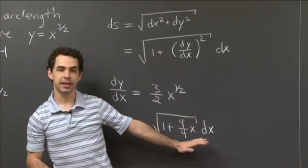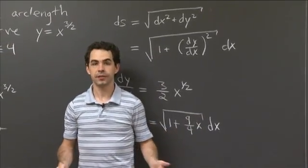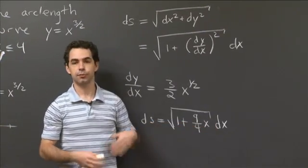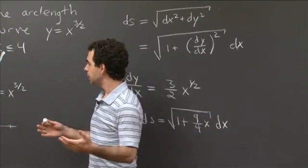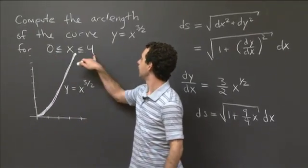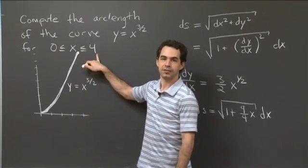So this is the thing that we want to integrate. And now you need bounds of integration. So in our case, this is dx. We want to integrate with respect to x, so we need bounds on x. And luckily, we have them. We have 0 less than or equal to x less than or equal to 4, the bounds that we want.